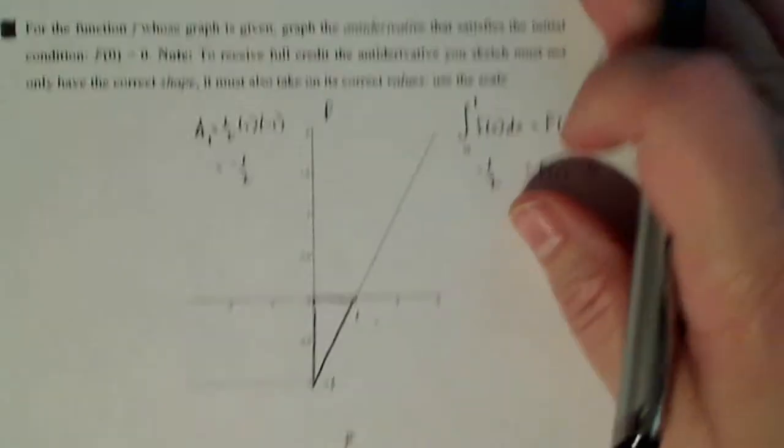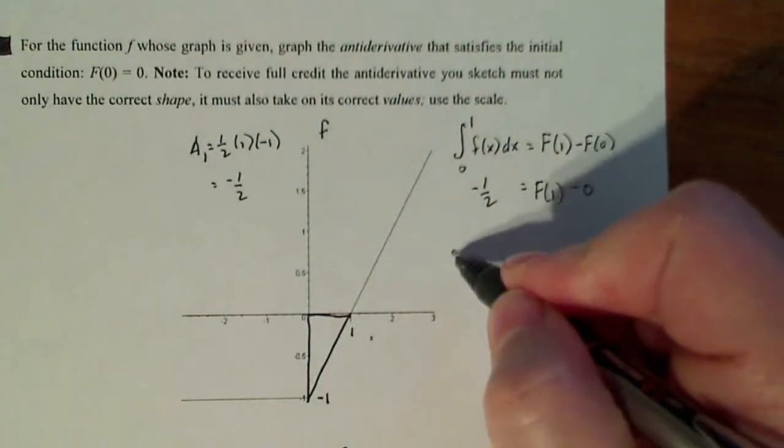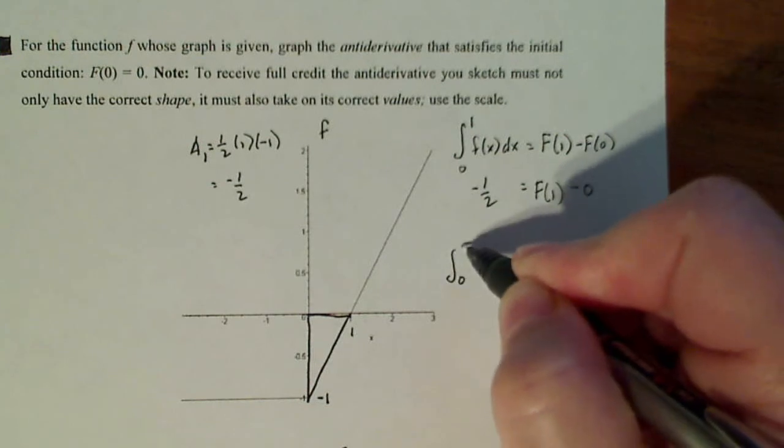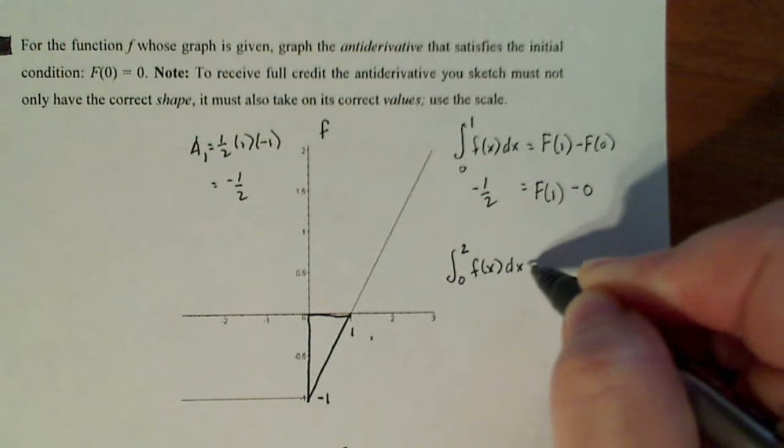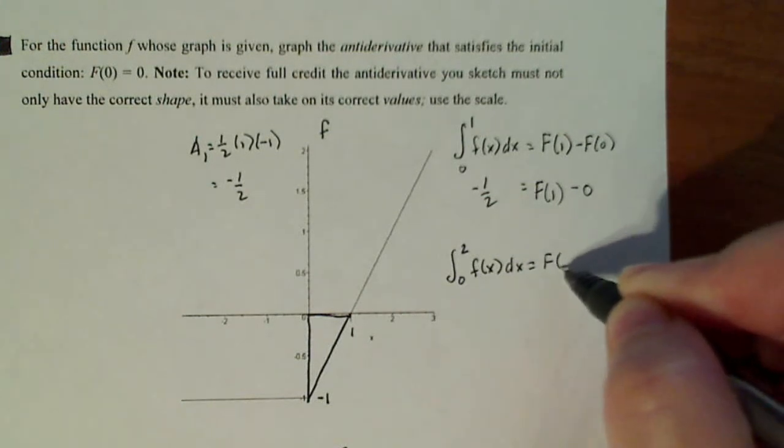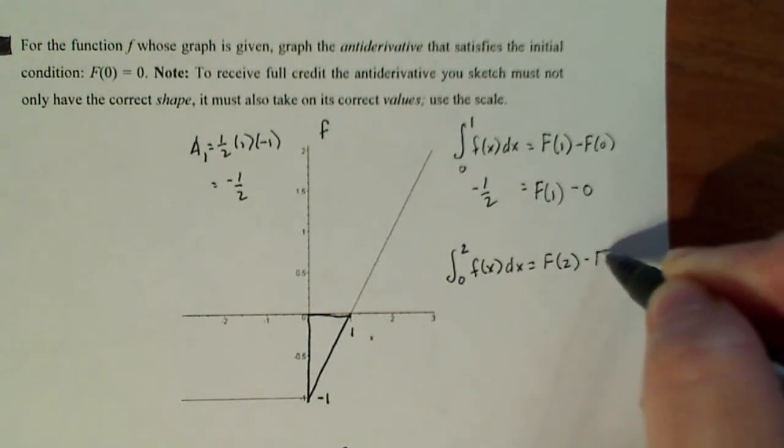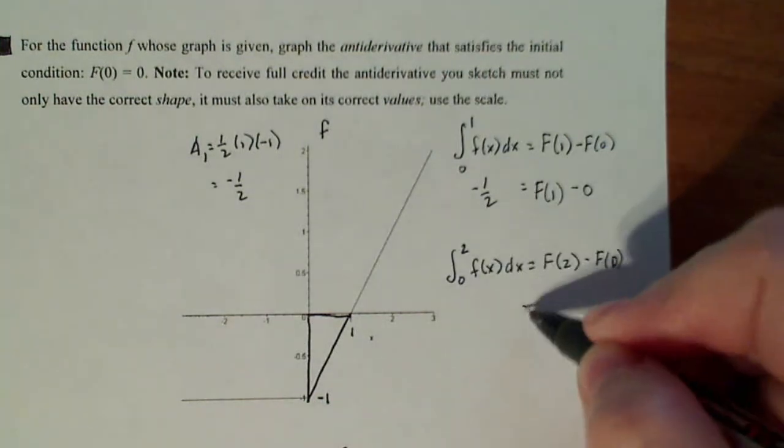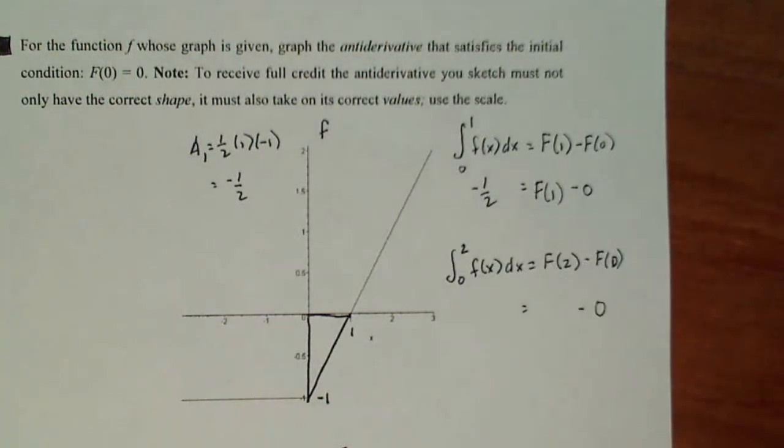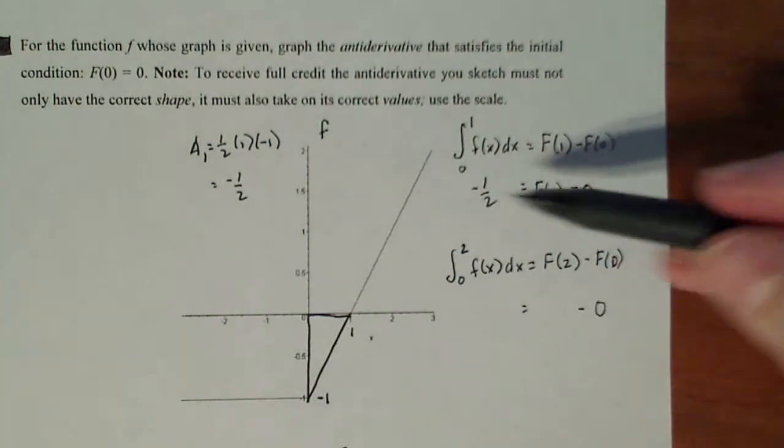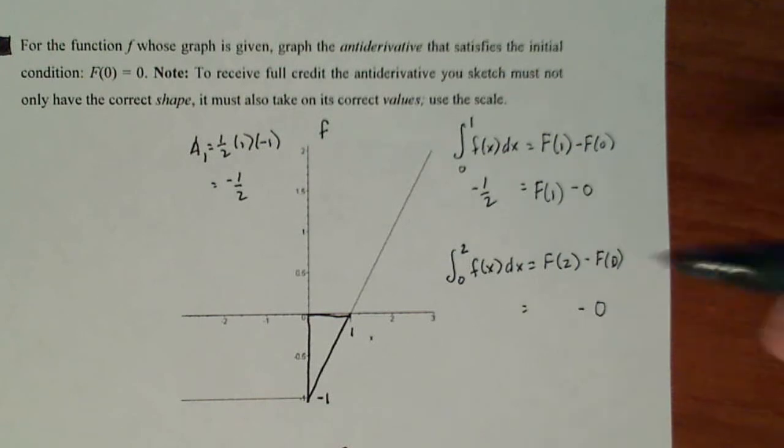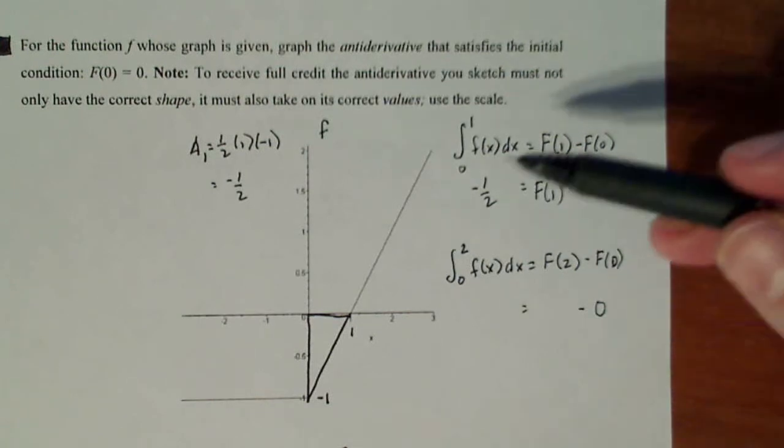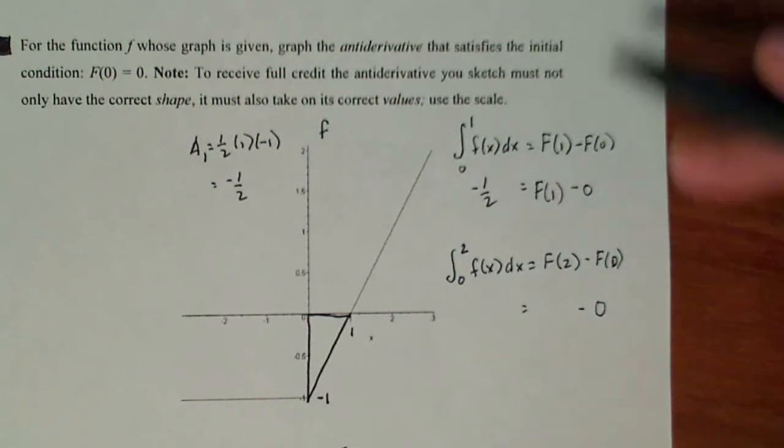We're going to do that also for f of two. So capital F of two, zero to two f of x dx equals f of two minus f of zero. And a lot of students are saying, why don't you just do f of one instead of zero? Well, it's because I know f of zero for sure. And I just want to make sure I'm not making a mistake. You always use the information you're given to find new information, regardless of if you found other information or not.